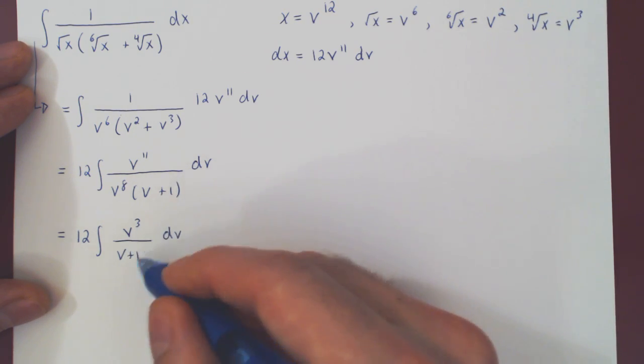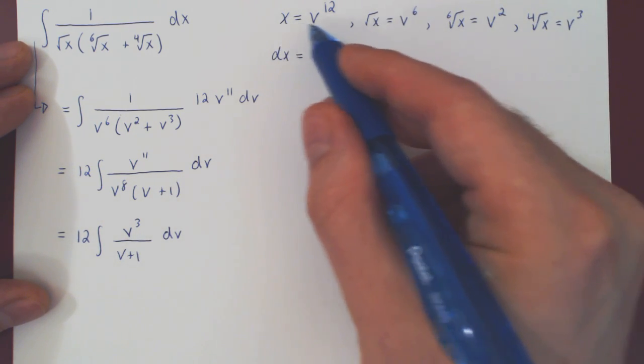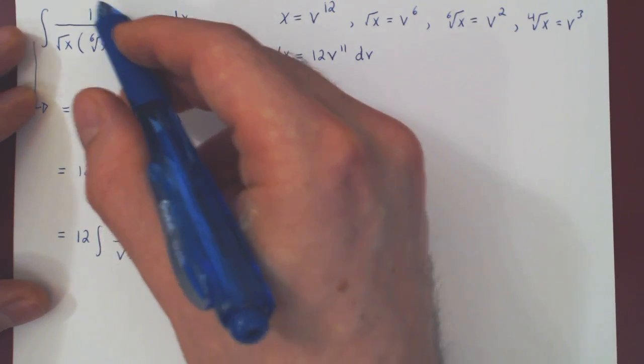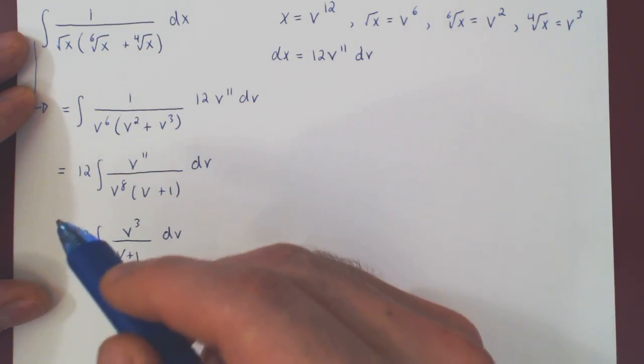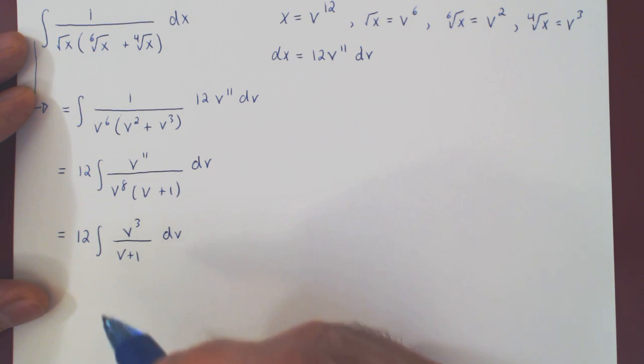Well, the first thing is that, yes, our v substitution did the trick. We went from this rather unpleasant looking expression to a simple rational function. So of course, now we have to use long division as three is larger than one.